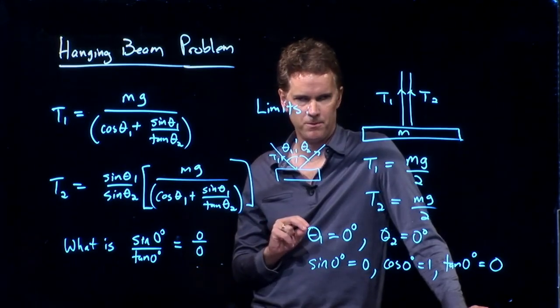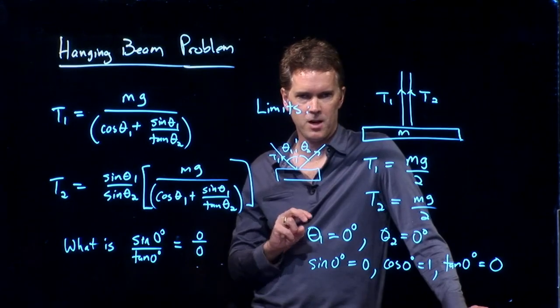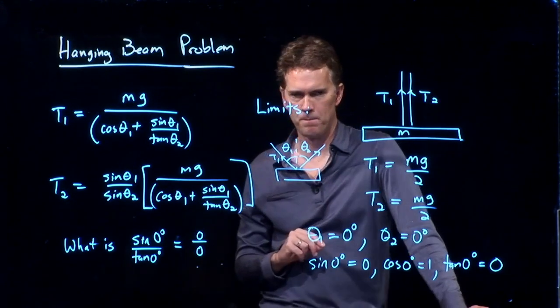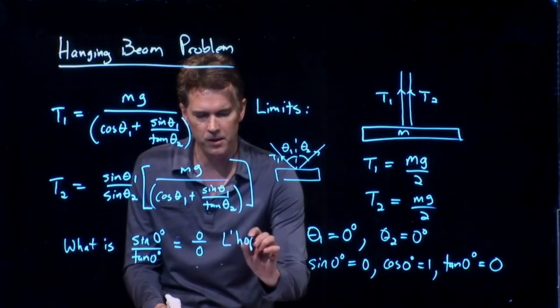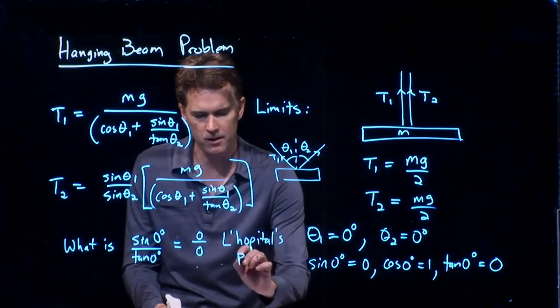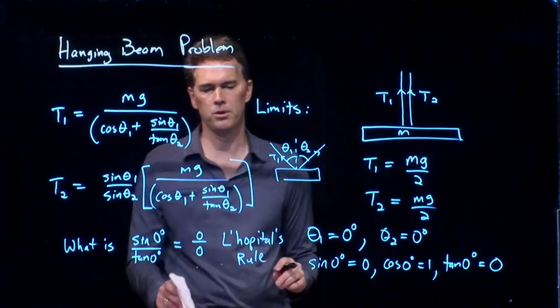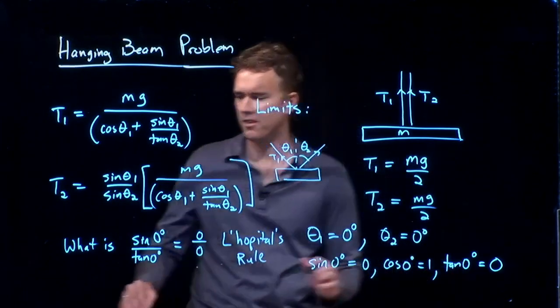I'm pretty sure it would be the same thing as sine squared over cosine, which would make it zero over one. Well, let's see. We've got sine of zero degrees over tangent of zero degrees. We know that sine of zero degrees is going to go to zero, but tangent of zero degrees is going to go to zero. So this thing is either going to go to zero, or it's going to go to infinity, or it's going to go to something in between zero and infinity. So, how do we figure out what it does? Anybody ever heard of something called L'Hopital's Rule? Okay, what is L'Hopital's Rule?